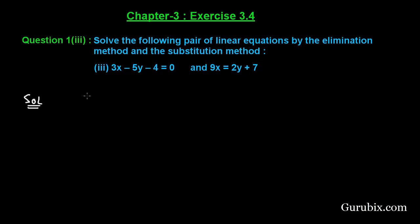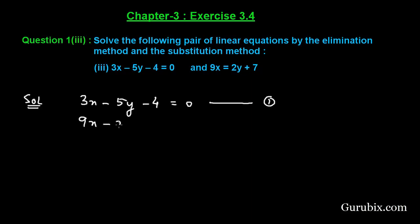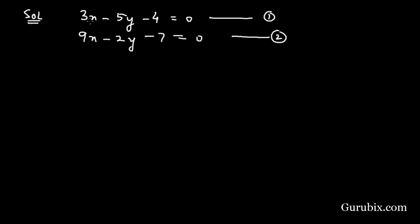First of all we shall collect the given equations. The first equation is 3x − 5y − 4 = 0. This is equation number 1. The second equation is 9x − 2y − 7 = 0. Now we shall multiply equation number 1 by 3.